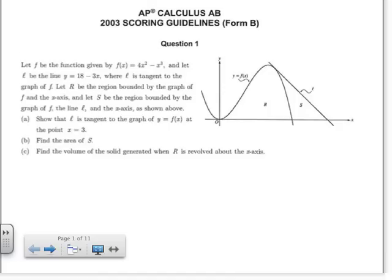I'm going to do one of the problems from 2003 AP Calculus Test, form B, question number one. Let f be the function given by f(x) = 4x² - x³, and let l be the line y = 18 - 3x, where l is tangent to the graph of f.